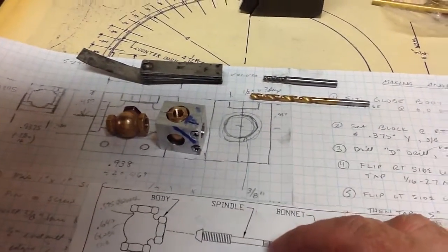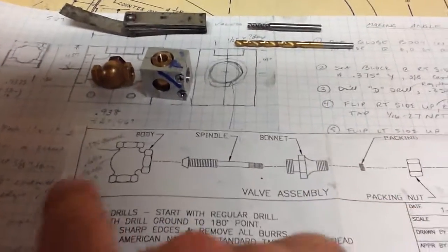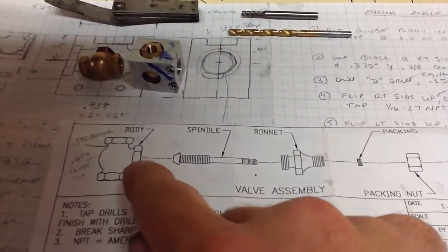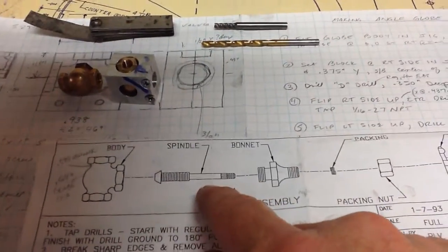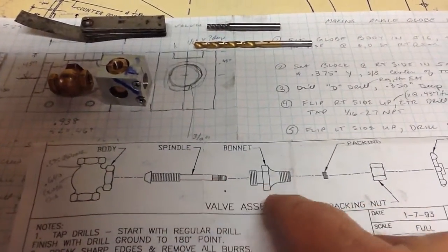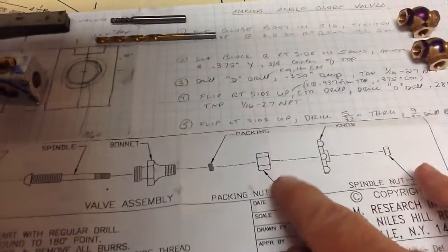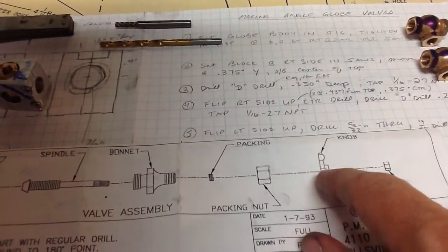So here's the little drawing of the various components. I've got two of the straight and two of the angle bodies done now. So next I can make on the lathe the spindle, the bonnet, and a couple of the nuts. They supply little knobs, I just have to do a little bit of drilling on those.